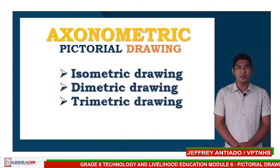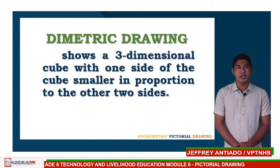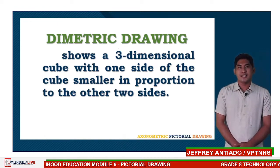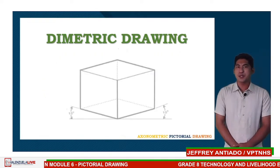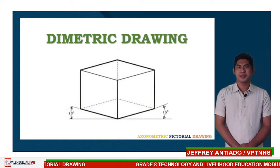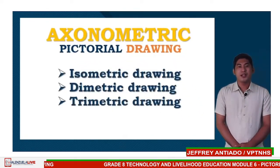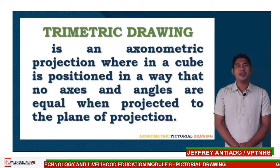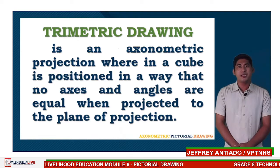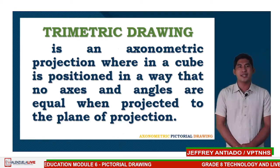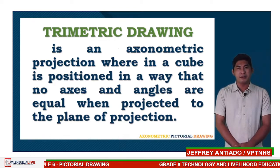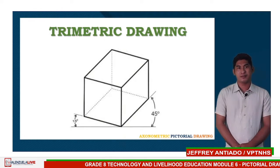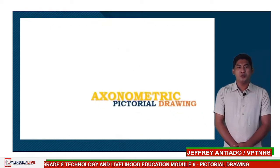Next is dimetric drawing. Dimetric drawing shows a three-dimensional cube with one side of the cube smaller in proportion to the other two sides. This type is not widely used. The third type of axonometric pictorial drawing is trimetric drawing. Trimetric drawing is an axonometric projection wherein a cube is positioned such that no axes and angles are equal when projected to the plane of projection.